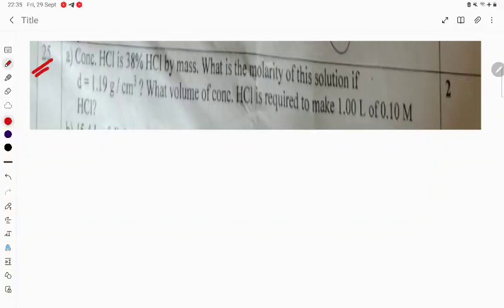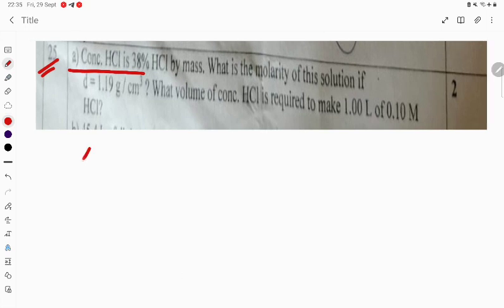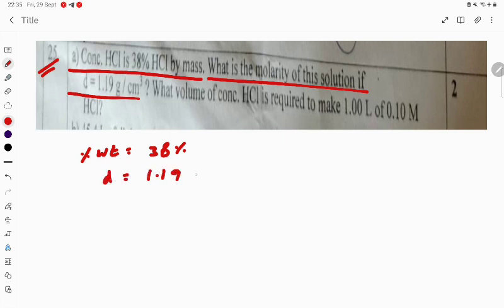Hello student, let's see problem number 25. Concentrated HCl is 38 percent by mass. What is the molarity of this solution if the density is 1.19 gram per centimeter cubed? What volume of concentrated HCl is required to make 1 liter of 0.10 molar solution?